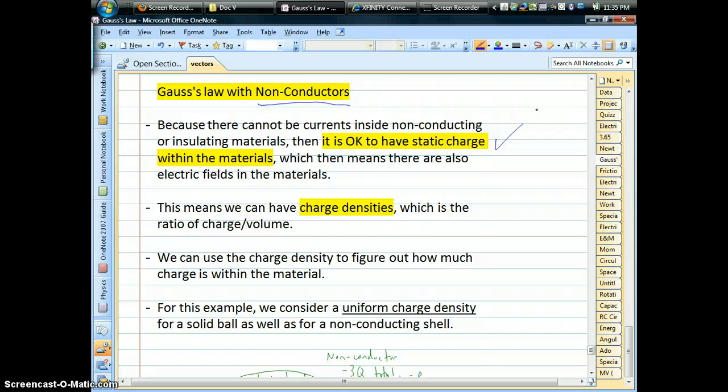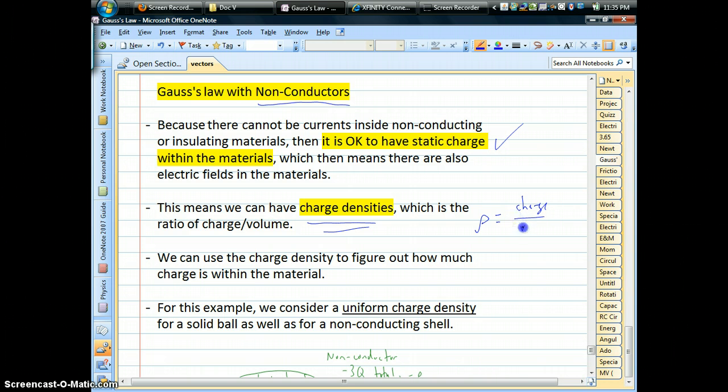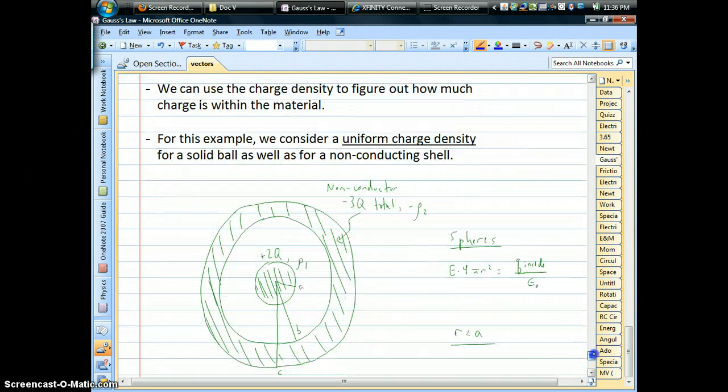So for non-conductors, these are the types where we end up having these charge densities. We use that symbol rho, which means how much charge you have per unit volume. Most of the time, we'll have a uniform charge density, meaning that this number, this rho, is going to be a constant. We can use it to figure out how much charge is within a certain volume of material.